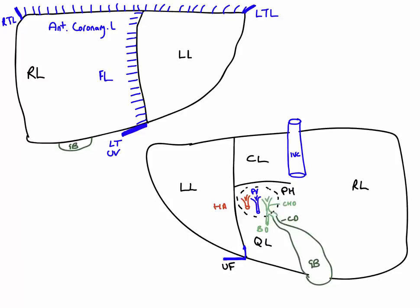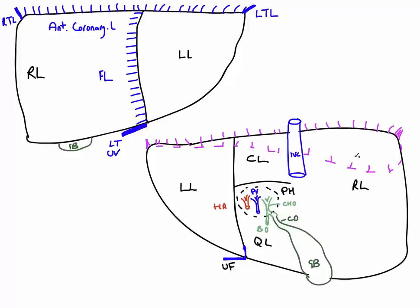The final detail to add is the coronary ligament on the visceral surface. We can draw the anterior layer of the coronary ligament passing up towards the diaphragm, with thickenings forming the left and right triangular ligaments. A layer of peritoneum on this visceral surface is also reflected, creating the posterior layer of the coronary ligament. The area between these reflections — not covered by peritoneum — is known as the bare area of the liver.